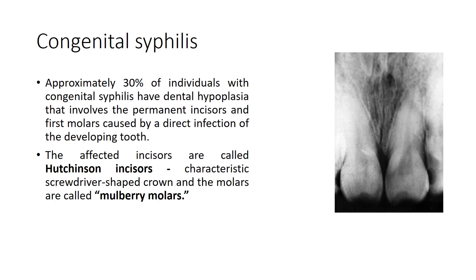Congenital syphilis: approximately 30% of individuals with congenital syphilis have dental hypoplasia involving permanent incisors and first molars, caused by direct infection of the developing tooth and pulp. The affected incisors are called Hutchinson's incisors, characterized by a screwdriver-shaped crown, and the molars are called mulberry molars.